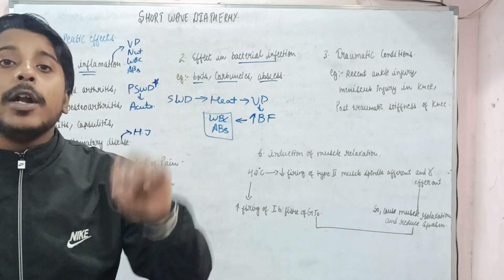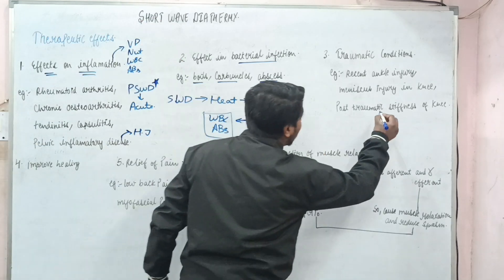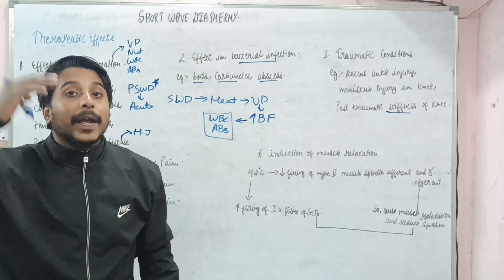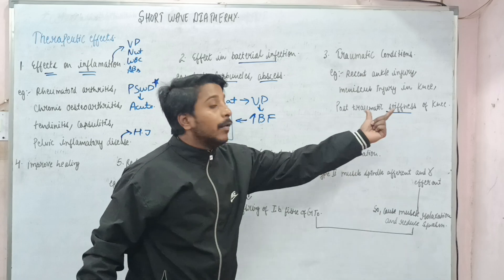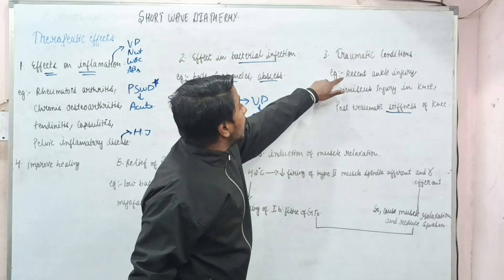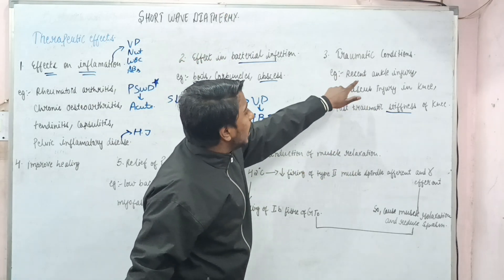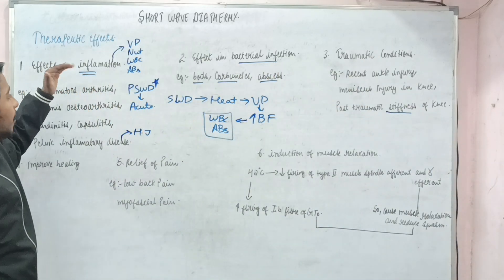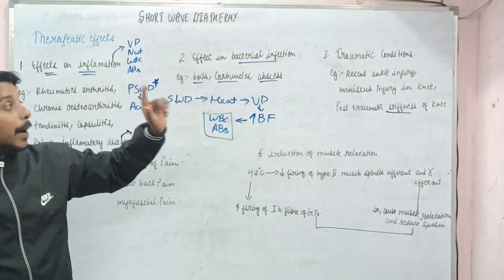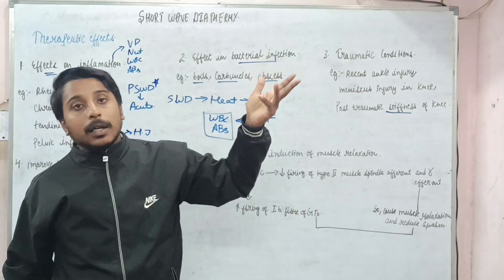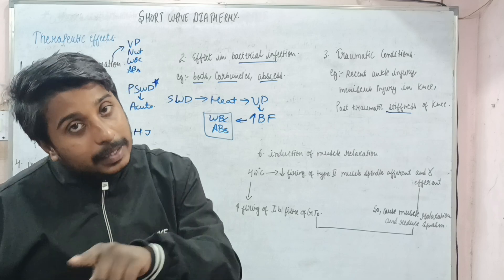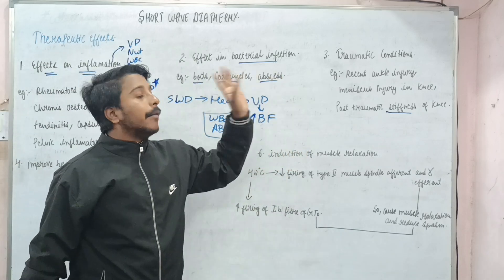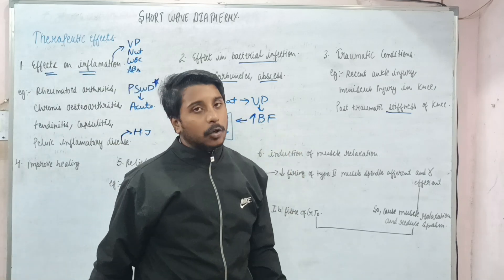Stiffness will come over time. So definitely here we will use continuous shortwave diathermy. But in case of recent ankle injury, when the symptoms are acute or the inflammation is acute, we will use the pulse one. But if the ankle injury is chronic and the ankle is very stiff, we will use the continuous shortwave diathermy which we are studying. This is about traumatic condition.